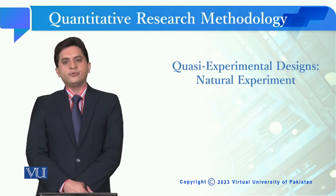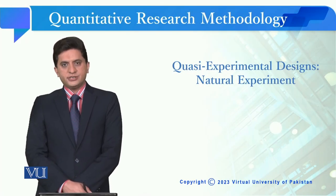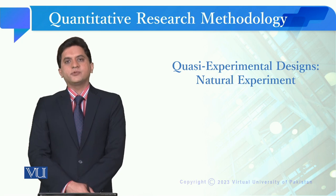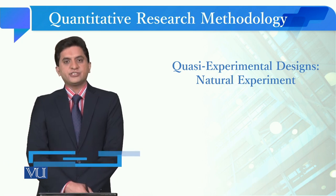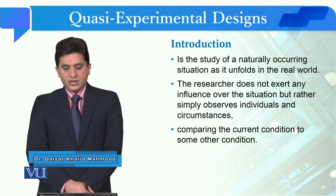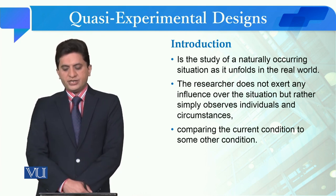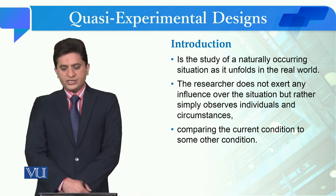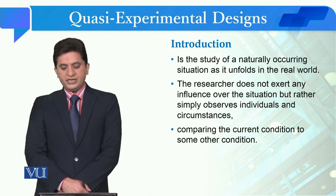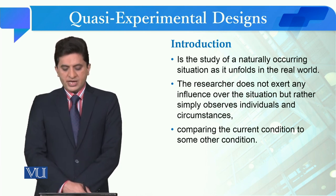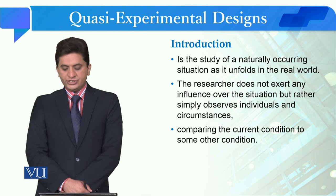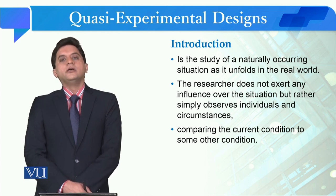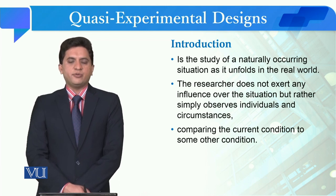Students, now we are going to study the last experimental design in quasi-experimental designs, which is the natural experiment. In the study of a naturally occurring situation as it is in the real world, the researcher does not exert any influence over the situation but rather simply observes individuals and circumstances, comparing the current condition to some other condition. The natural experiment is what happens when we have a natural phenomenon.